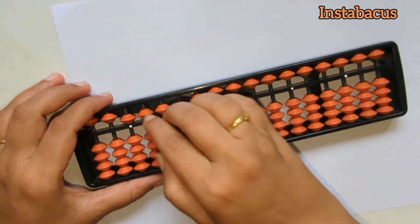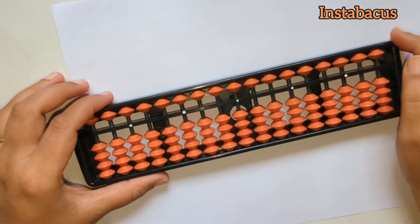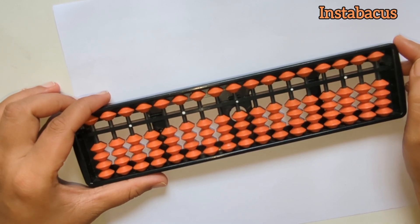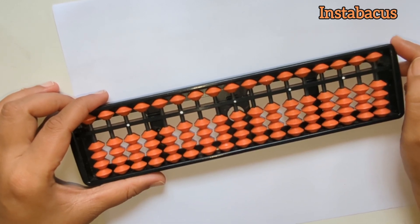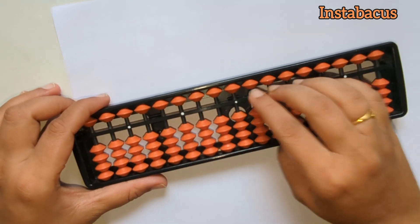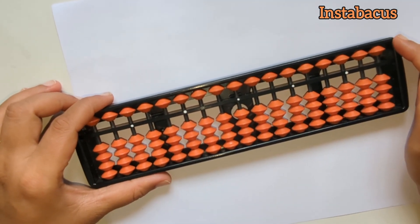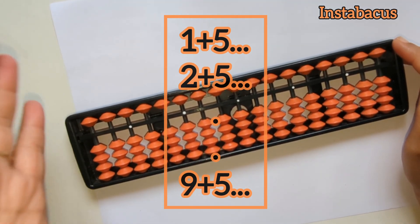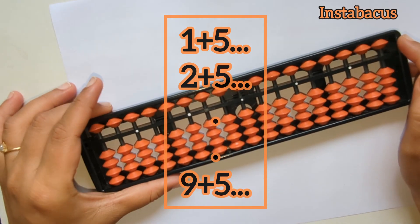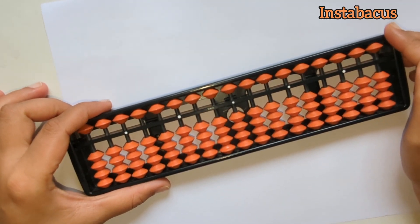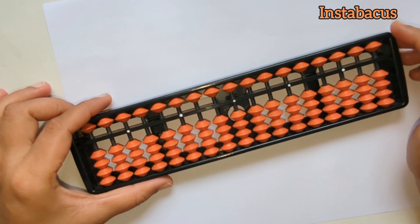Hi there, welcome to Insta Abacus. Until now we have seen simple addition using abacus, addition using small friends, and also addition using big friends. Now that we know all the details, today we are going to focus on adding five to each digit from one to nine. It is going to get a little tricky when we add five to seven, eight, or nine, so please stay tuned until the end.